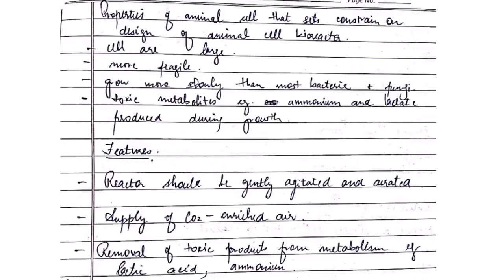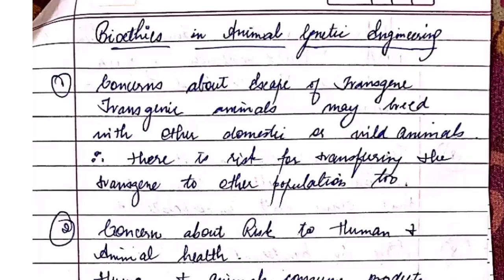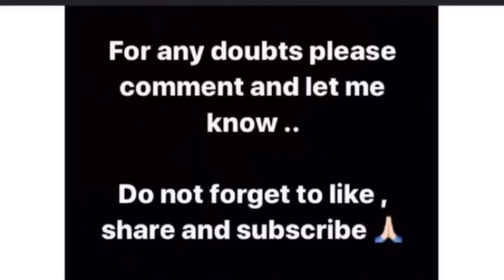Some properties of animal cells constrain the design of animal cell bioreactors — for example, the cells may be large in size. The last topic is bioethics in animal genetic engineering — the problems faced in creating transgenic animals. Major concerns may be related to human and animal health, drug-resistant gene markers, or ecological concerns that reduce disease resistance in plants. That's all for today's lecture on transgenic animals and bioreactors. Thank you for watching — do comment for any doubts, and don't forget to like, share, and subscribe.